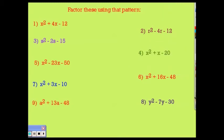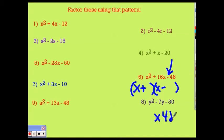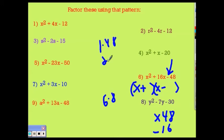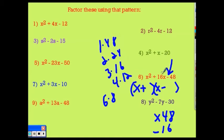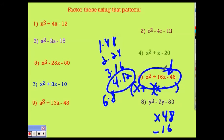Moving on to number 6. I know my signs are going to be different because of the minus sign. I'm looking for two numbers that multiply to 48 and subtract to give me 16. Let's check: 24 and 2 — no; 6 and 8 — no; 1 and 48 — no; 2 and 24 — no; 3 and 16 — no; 4 and 12 — no. These don't subtract to give me 16 — they add up. So this polynomial is considered prime. It cannot be factored.